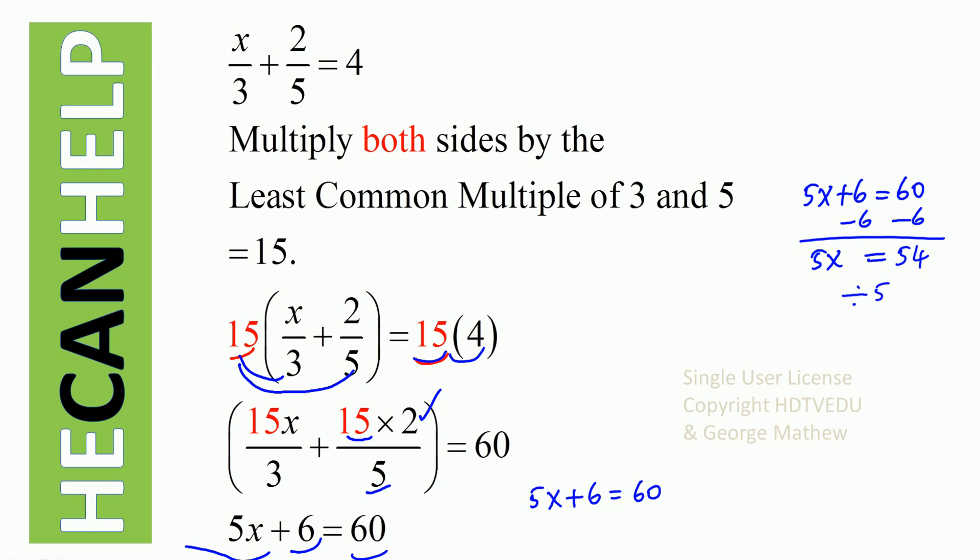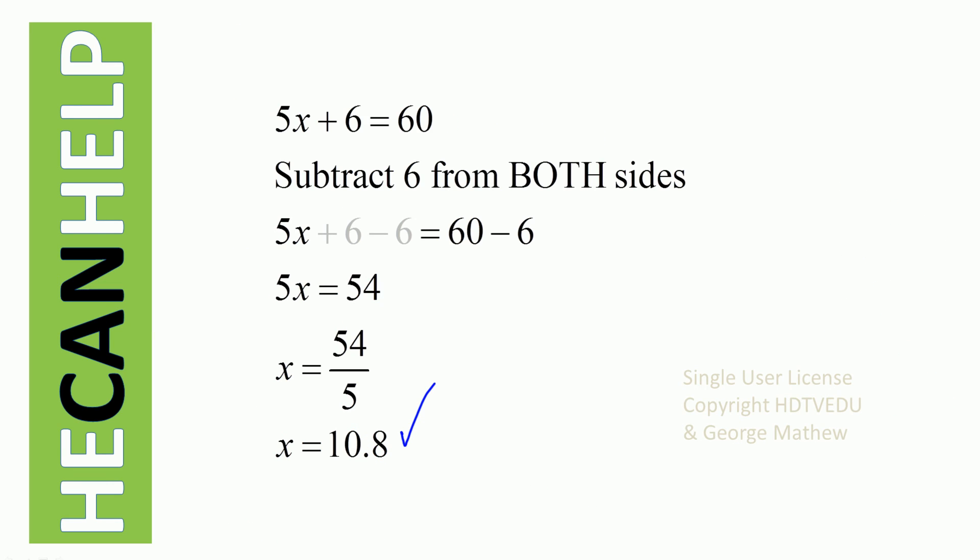Divide both sides by 5 and you get x is equal to 54 divided by 5, and that is 10.8. x is equal to 10.8.